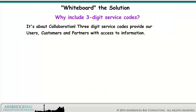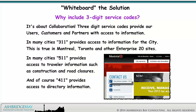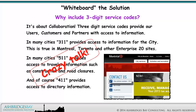It's about collaboration. Three-digit service codes provide our users, customers, and partners with access to information. In many cities, 311 provides access to information for the city — this is true in Montreal, Toronto, and other Enterprise 20 sites. In many cities, 511 provides access to traveler information such as construction and road closures. And of course, 411 provides access to directory information. Not providing access to this information is crazy talk.